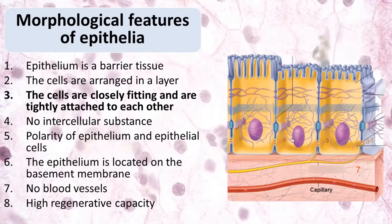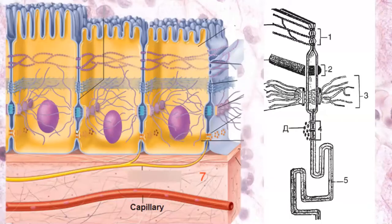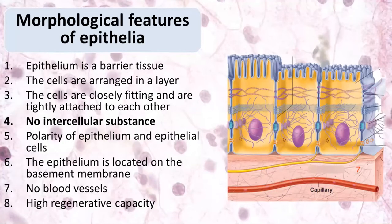Neighboring epithelial cells are very closely attached to each other. They have special intercellular junctions with different cell junction types, which you already know from cytology. These junctions provide mechanical attachment between neighboring cells, resulting in the feature that there is almost no intercellular substance — cells are located very close to each other and intercellular substance is almost absent.